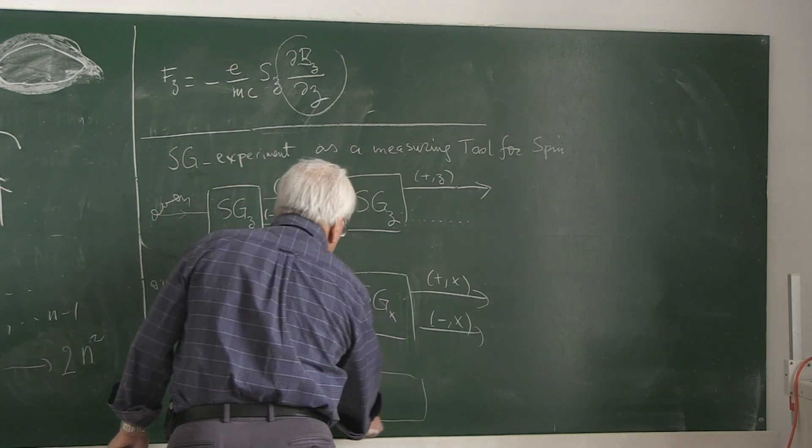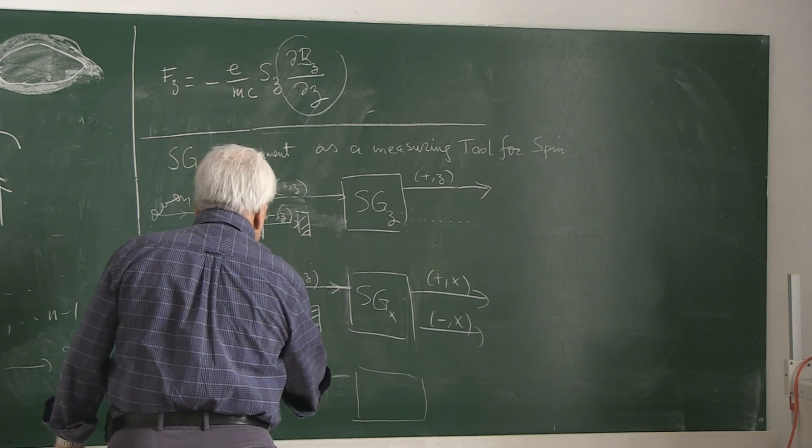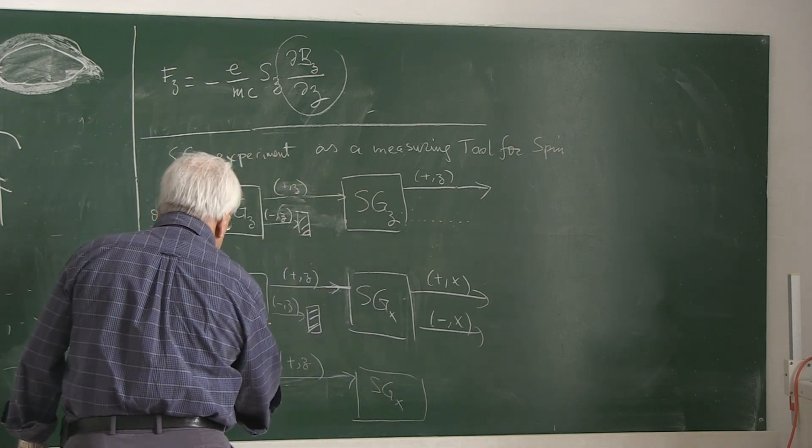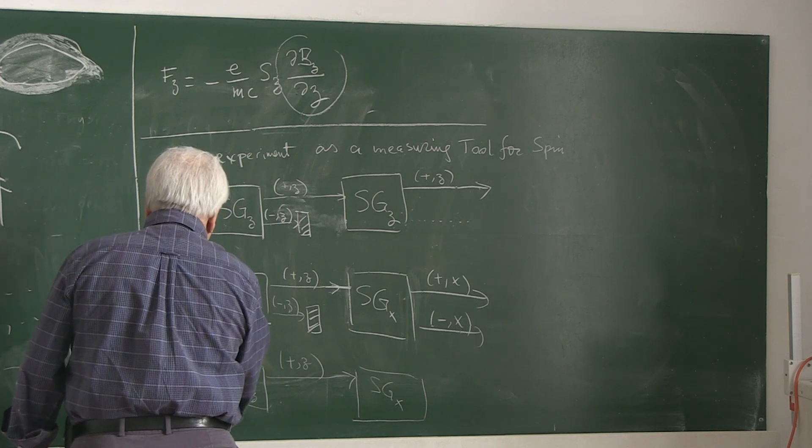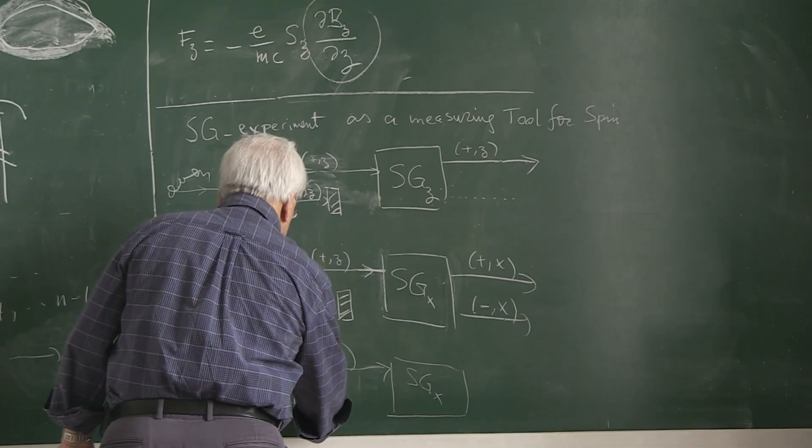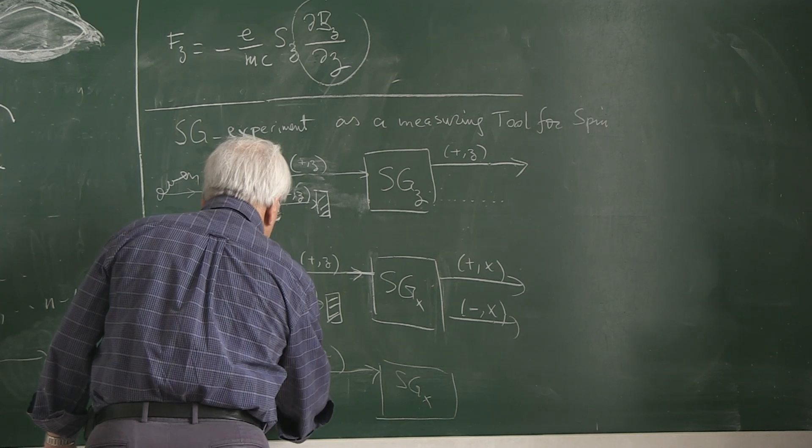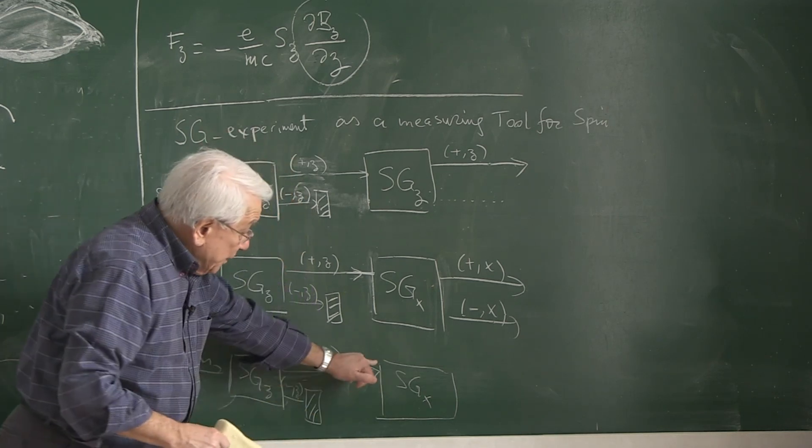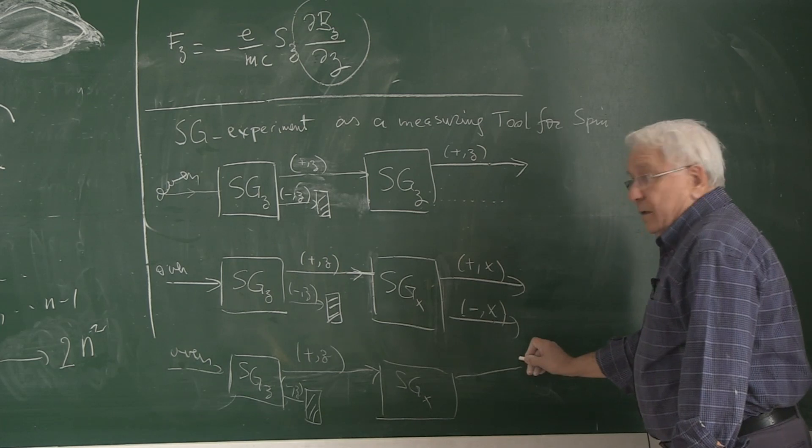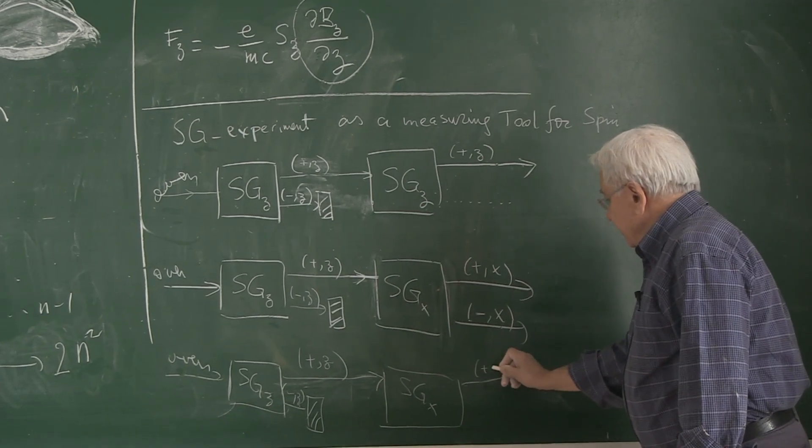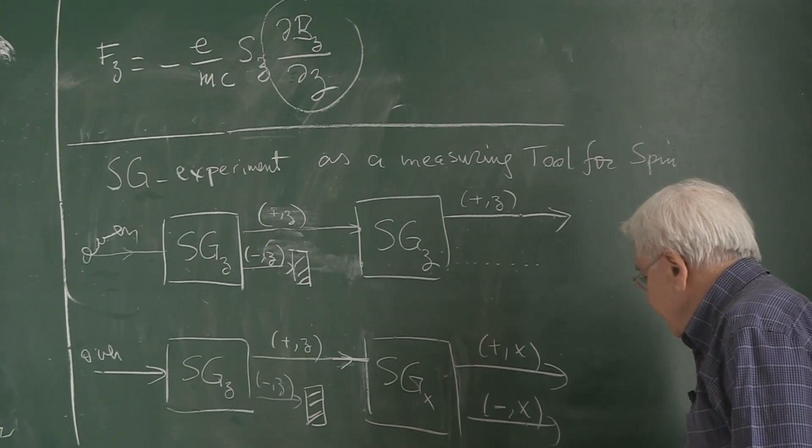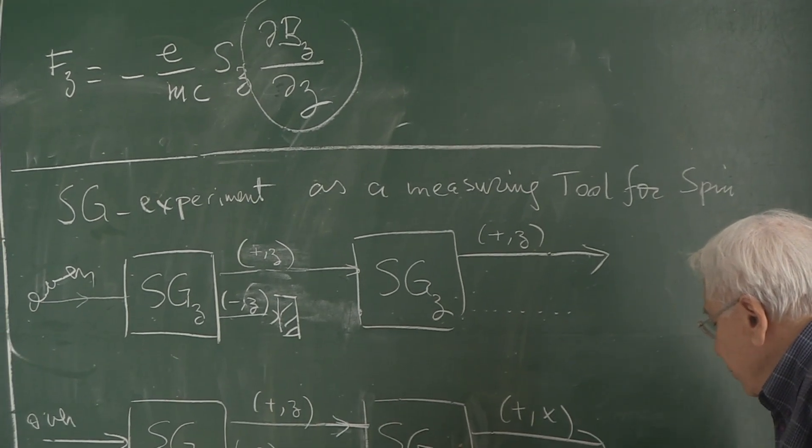This is the same as before. I have the plus Z polarized beam reaching here SGX. This is the SGZ originally. That's coming from the oven, a mixture of randomly polarized stuff. This lower one is blocked. Minus Z is blocked. So I have a purely Z polarized beam reaching the X type of gadget.